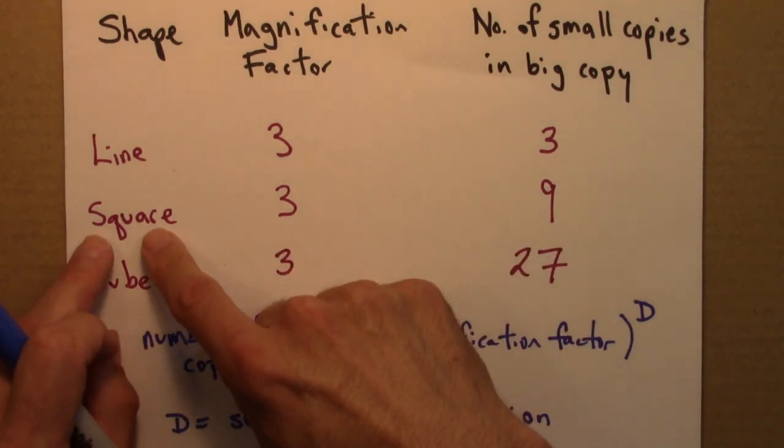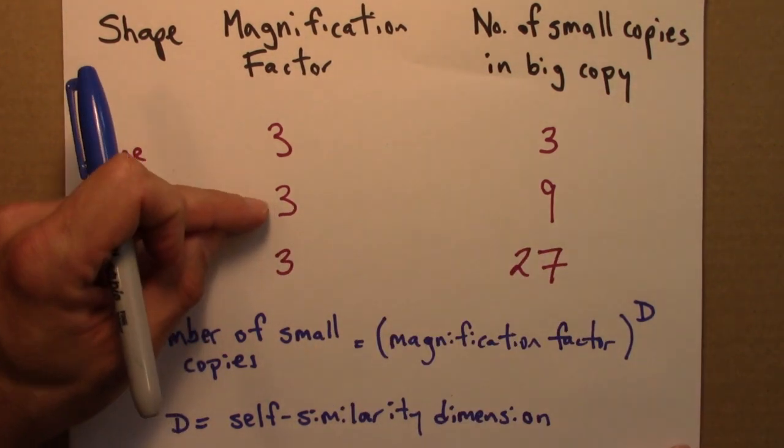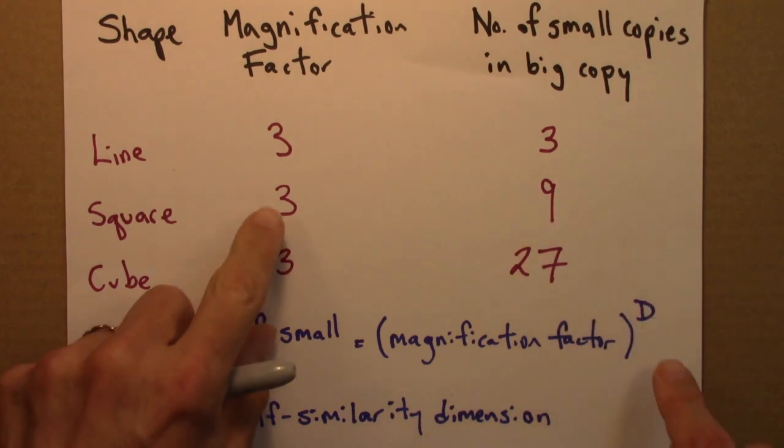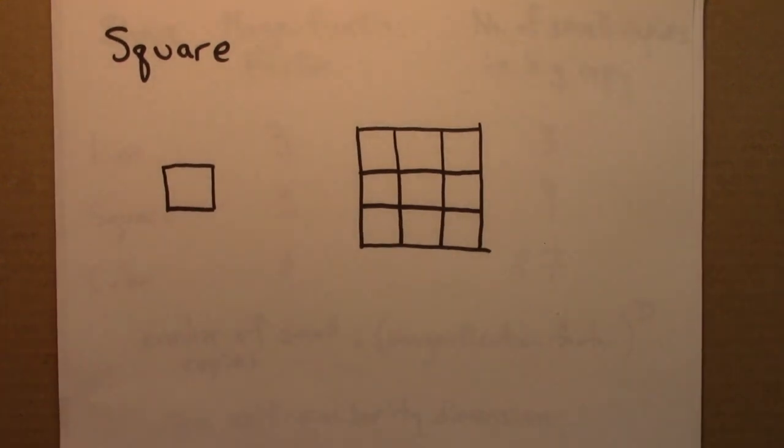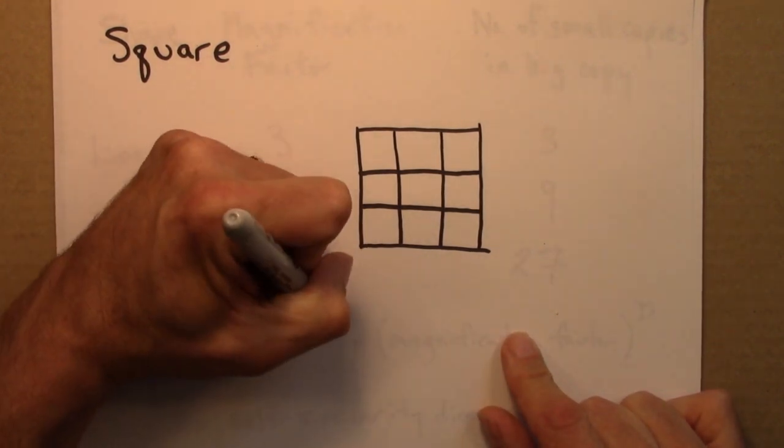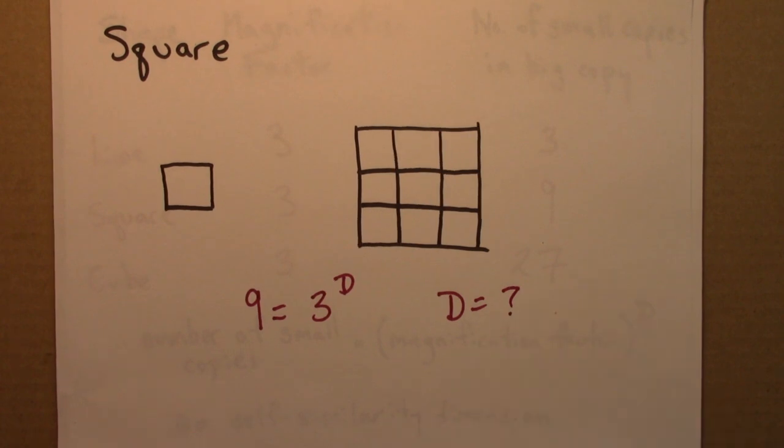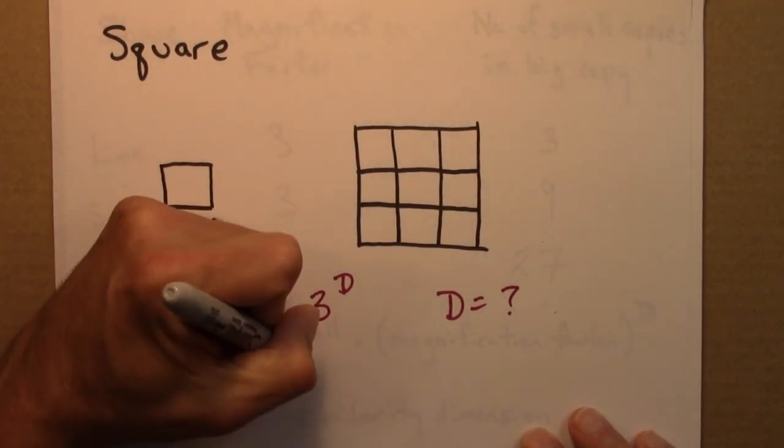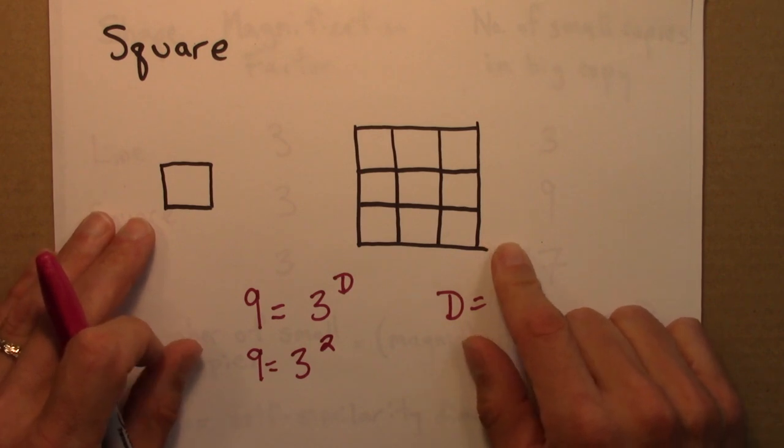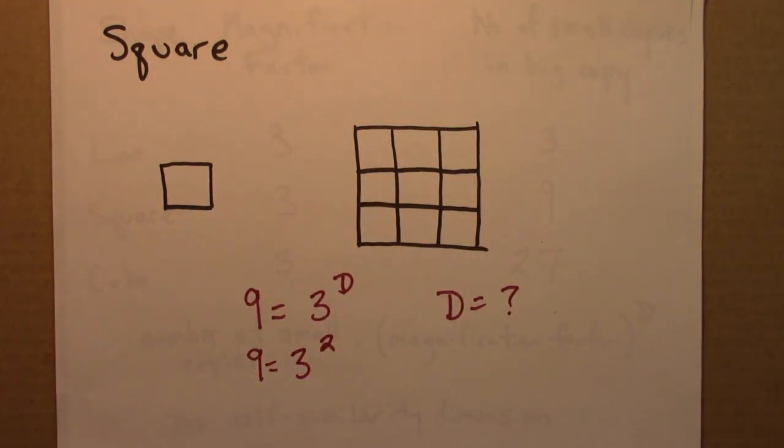So let's think about this. What is it telling us? So let's start with a square first. So square has a magnification factor of 3. And the number of small copies in the big copy is 9. And so then what d would that be? Let's go back here. So number of small copies is 9. And the magnification factor is 3. So we wonder, okay, what's the dimension? Well, d would have to be 2. Because 9 is 3 squared. So we'll say that the square has a dimension of 2. And that makes sense. That's consistent with our intuitive idea of dimension. A square has an extent in 1 and 2 directions. So we think of a square as 2 dimensional.